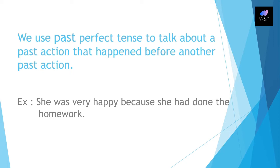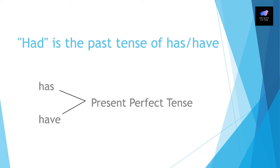Here you can find that there are two past actions. The first one is 'she was very happy' and the second one is 'she had done the homework.' Why was she very happy? Because she had done the homework. So in this sentence we use 'had' before the verb. This 'had' is very important — it is the past tense of 'has' and 'have.' Has and have are present perfect tense, but 'had' is the past perfect tense.